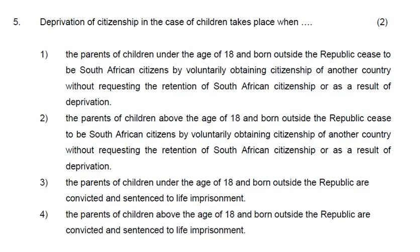The fifth question: 'Deprivation of citizenship in the case of children takes place when...' — the answer is one: the parents of children under the age of 18 and born outside the Republic cease to be South African citizens by voluntarily obtaining citizenship of another country without requesting the retention of South African citizenship, or as a result of deprivation. This is found on page 18 of our study guide.